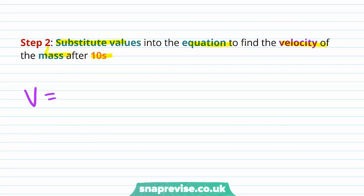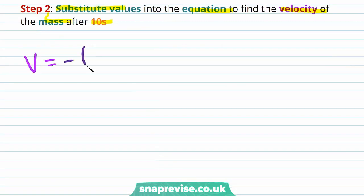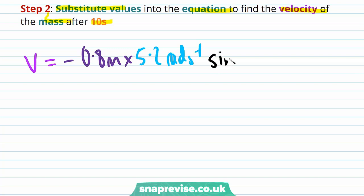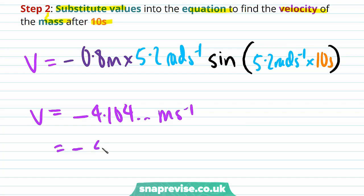Step two is to substitute values into the equation. Velocity is equal to minus amplitude times angular frequency, which is minus 0.8 meters multiplied by 5.2 radians per second, multiplied by the sine of the angular frequency times the time elapsed — 10 seconds. We find that velocity is equal to minus 4.104 meters per second, which is minus 4.1 meters per second to two significant figures.